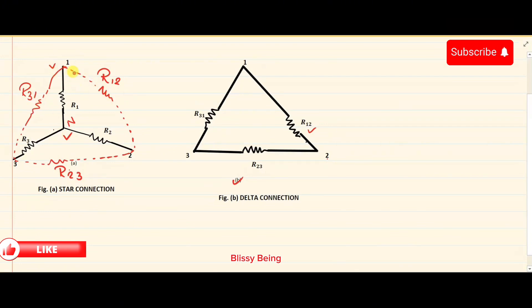Similarly, if you want to convert the delta circuit into a star, what you need to do is draw the resistors like this. Add one resistor to each terminal.